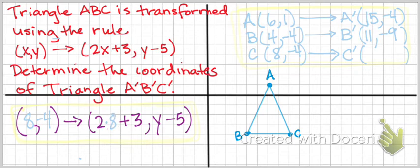2 times 8 is 16, plus 3 is 19. And then our new Y coordinate is going to be our original Y coordinate, minus 5, which is negative 9. So the new coordinates for our new C point, C prime, are going to be (19, -9).